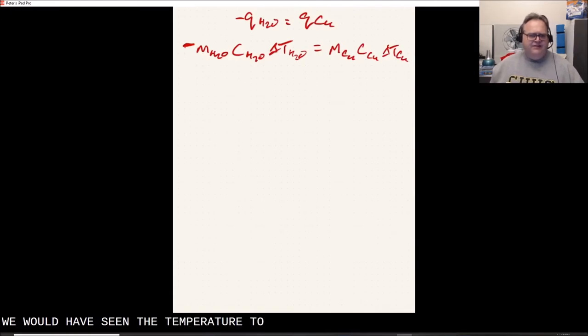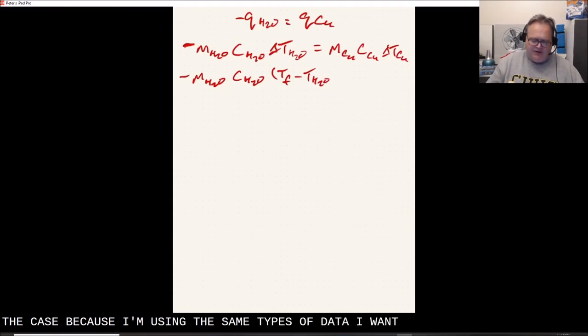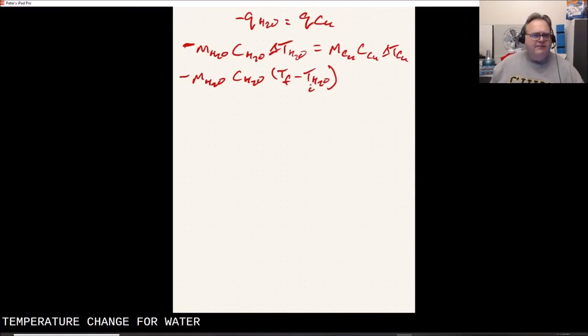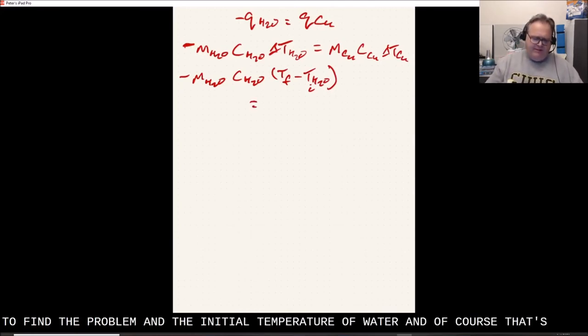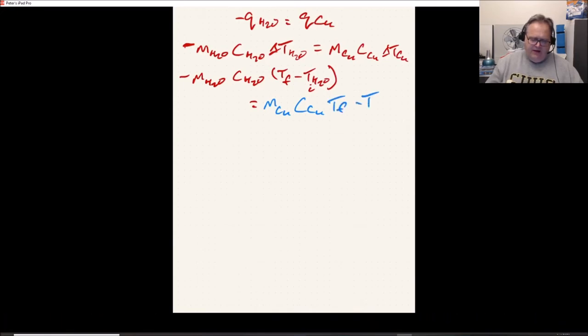The amount of energy transferred has to be the same. We can change this into the mass of water times the heat capacity for water and the change in temperature for water. That's no different than what we would have seen in the last video, connecting heat to a heat capacity of an amount and a temperature change. And we've got to remember that negative sign in there.